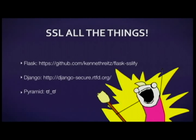Flask and Django both have tools to enforce SSL. There's Flask-SSLify, which forces your site to use SSL and also uses HSTS — an extension to SSL providing an additional layer of security. Django has a tool called Django-Secure, which I believe will be built into Django around version 1.7. I was unable to find an equivalent for Pyramid, so either someone needs to tell me I'm wrong or someone needs to build this.